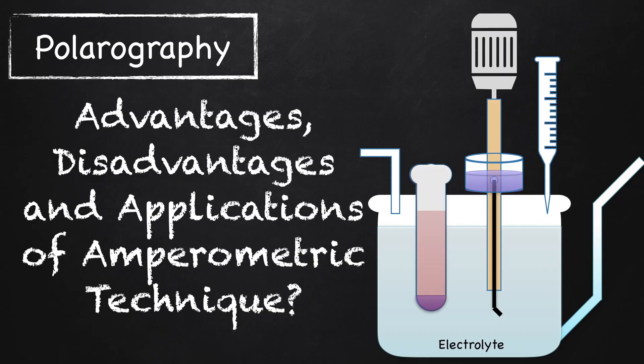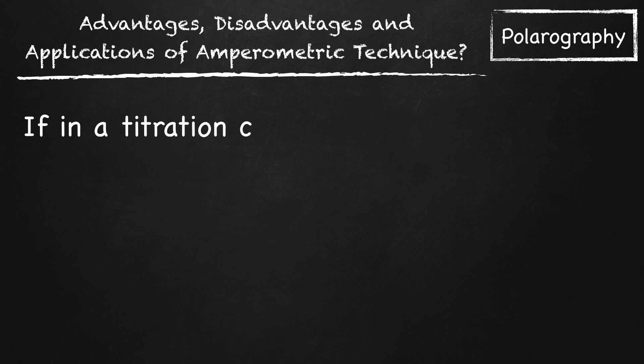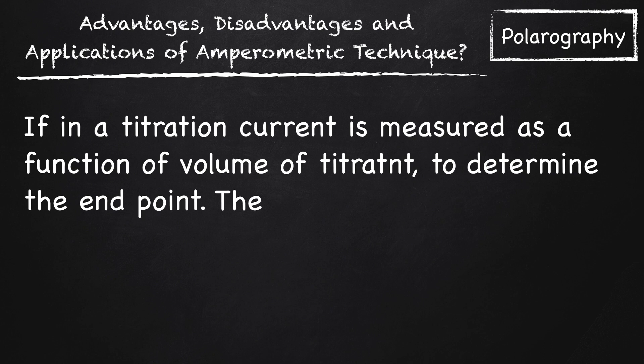What are the advantages, disadvantages and applications of amperometric titration? If in a titration, current is measured as a function of volume of titrant to determine the end point, the titration is known as amperometric titration.